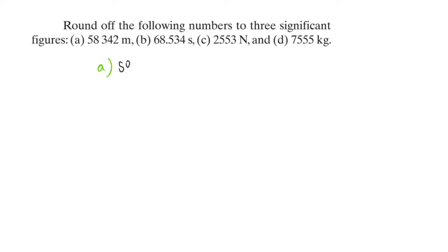We have 58,342. So our first three numbers are 5, 8, and 3. But notice how 4 is smaller than 5, which means the 3 is not going to round up. So our answer is 58,300.